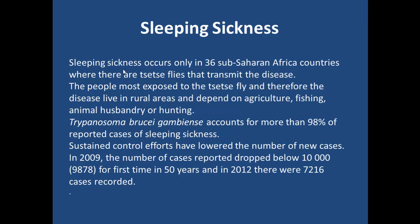It occurs in over 36 sub-Saharan African countries where tsetse flies transmit the disease, and people most exposed are those who live in rural agricultural and fishing areas where these tsetse flies tend to live. The Gambiense version accounts for 98% of reported cases, so it is the bigger problem numerically. Sustained control efforts have lowered the number of cases — in 2009 there was a drop below 10,000 for the first time in 50 years, and in 2012 it was 7,200. The WHO is leading a sleeping sickness campaign to prevent it, with fast treatments to prevent spread within communities.